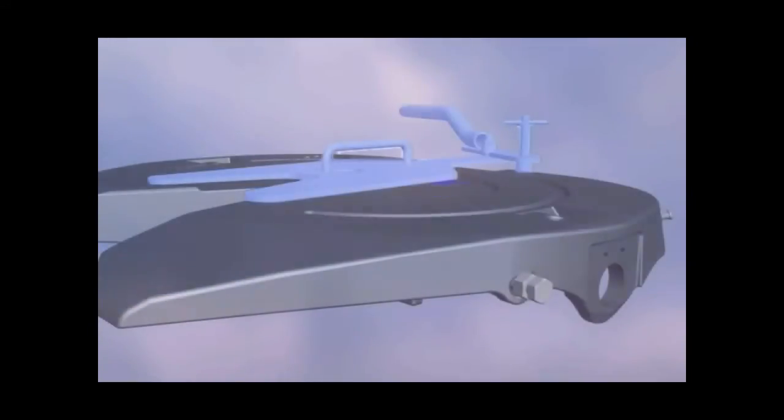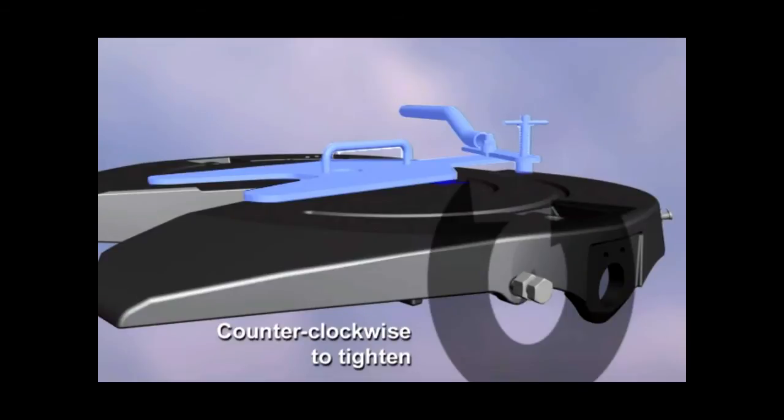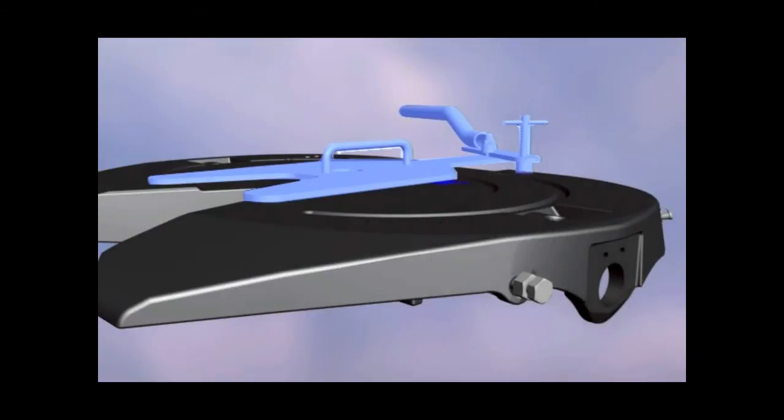If adjustment is needed, use the following procedure. To tighten the adjustment, loosen the jam nut and turn the adjustment screw one full turn counter-clockwise and retest. Repeat as necessary and retighten the jam nut when finished.